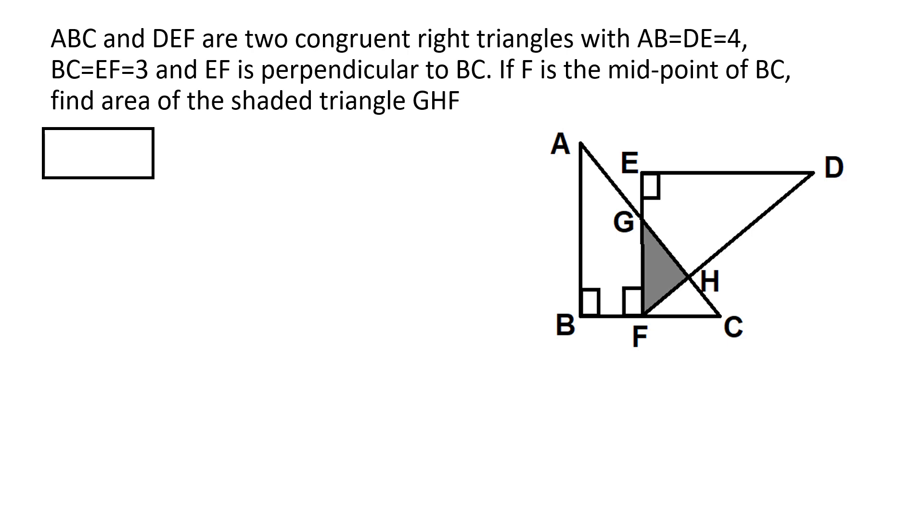And this problem comes with the figure where it's indicated that in triangle ABC, B is the right angle and similarly in triangle DEF, E is the right angle. And EF being perpendicular to BC, so that's also at right angles to BC.